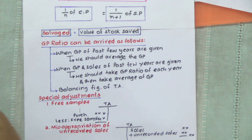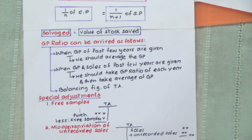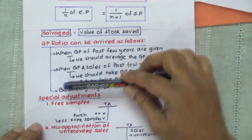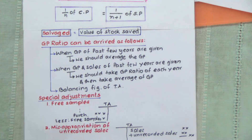We'll be using one of the three methods — the gross profit method, this method, or this method.